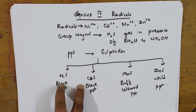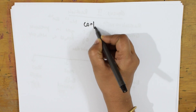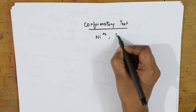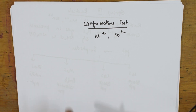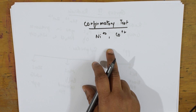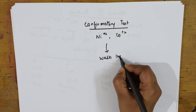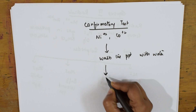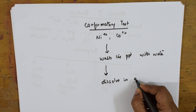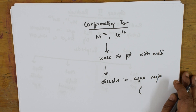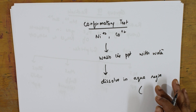For nickel as well as cobalt, Ni²⁺ and Co²⁺, first take the precipitate, wash it with water, and dissolve this precipitate in aqua regia. Aqua regia is a mixture of concentrated HCl and nitric acid, or concentrated HCl in the presence of potassium chlorate (KClO3).